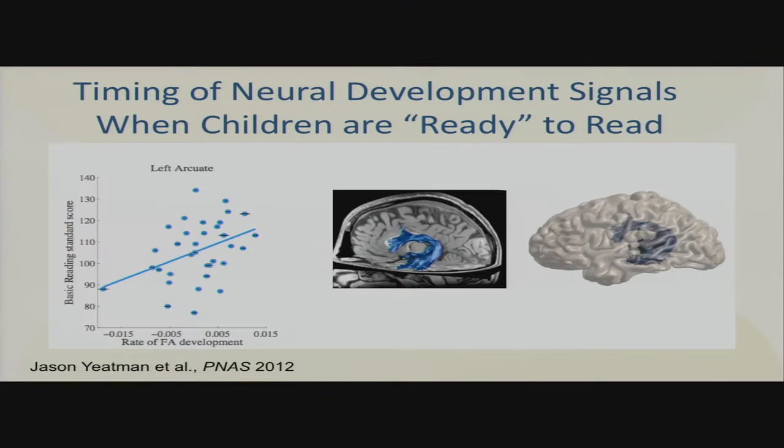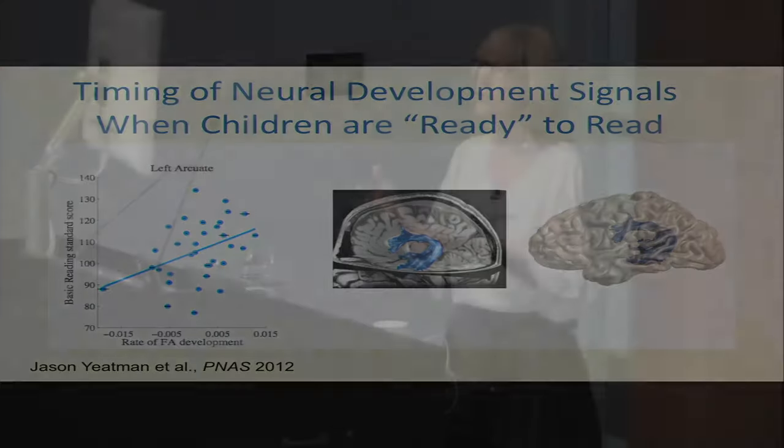There's other work on DTI and whole-brain imaging that is leading to measures predicting when children are ready to read. The bottom line is that the future of neuroscience for children is that we will be identifying early predictors showing the tendency towards risk for developmental disabilities, and that we would be able to get in and treat them. Jason Yateman has a measure of the arcuate that demonstrates there's a time where reading instruction is too early, a time when it's too late, and a time when it's just right. When FA is increasing rapidly in the arcuate, that's the time for reading instruction.